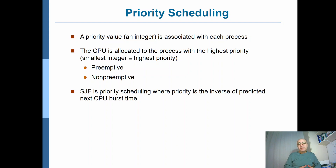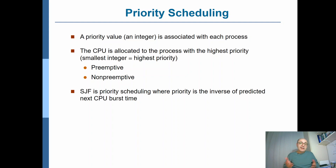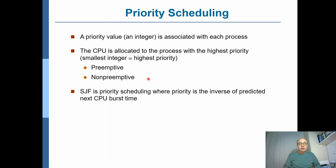We can make the system preemptive or non-preemptive. The question is: what happens when a very high priority process arrives while a lower-priority process is executing in the CPU? The preemptive approach would pause the running process and immediately handle the high-priority one. The non-preemptive approach would finish the current process first, then consider the high-priority process when picking the next one.